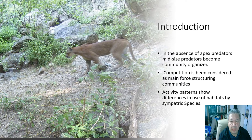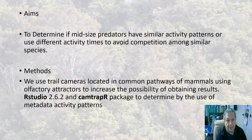When the apex predator of the ecosystems, like mountain lions, disappears from the ecosystems, a phenomenon called mesopredator release happens. That means the smaller-sized predators from 1 to 20 kilos become the top of the food chain in the ecosystem. It implies that the competition among these species is much harder than when the apex predator is present. In semi-arid lands of Mexico, most of the apex predators have vanished.